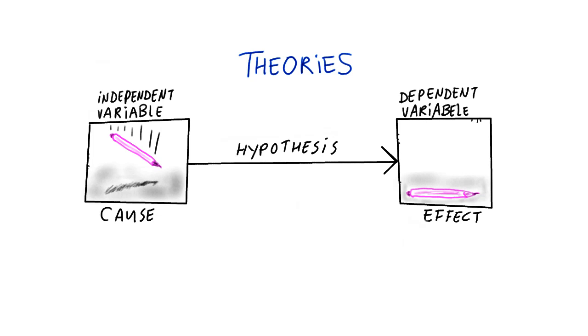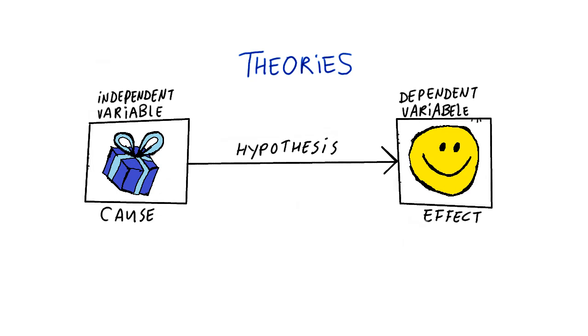If we change our example and look at the theory that giving someone a gift causes them to like you better, then the independent variable here is gift giving, and the dependent variable is how much you are being liked by someone.